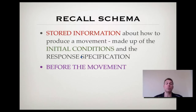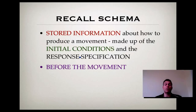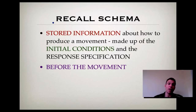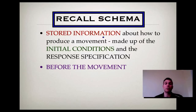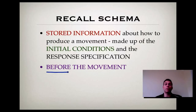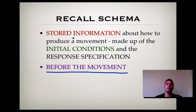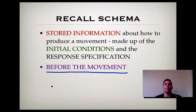There are two parts to Schema Theory crucial to understanding why we produce certain movements to perform a skill. The first is our Recall Schema, and this happens before the movement. The second is Recognition Schema, which occurs during and after the movement. Stored information about how to produce a movement forms the basis for our motor program, made up of initial conditions and the response specification.